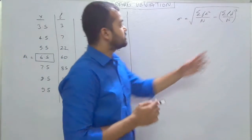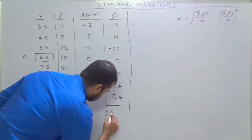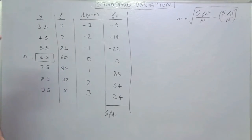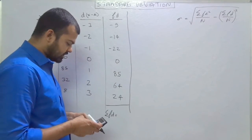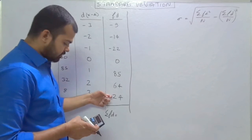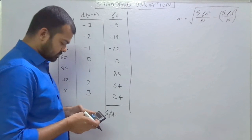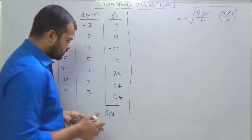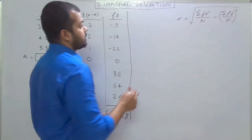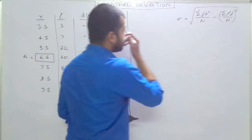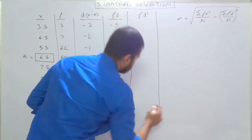Now we have to obtain the total of the fd column — that is summation fd. We add all the positive values: 85 + 64 + 24, then deduct the negative values: −9, −14, and −22. The figure comes out as 128. So summation fd = 128.